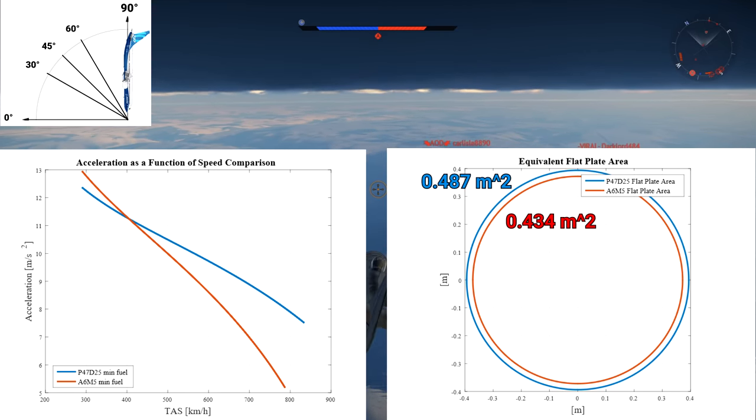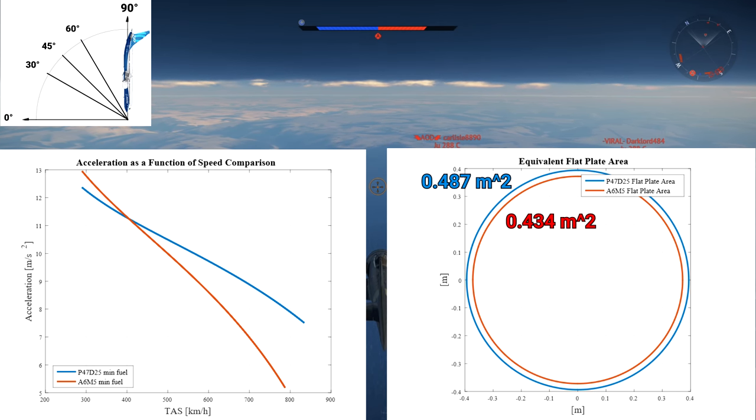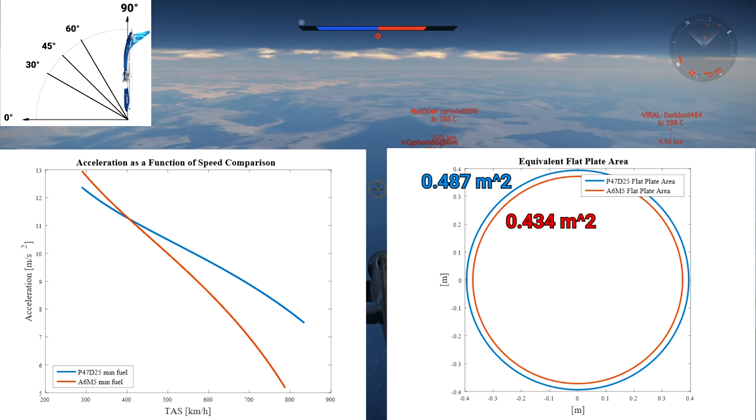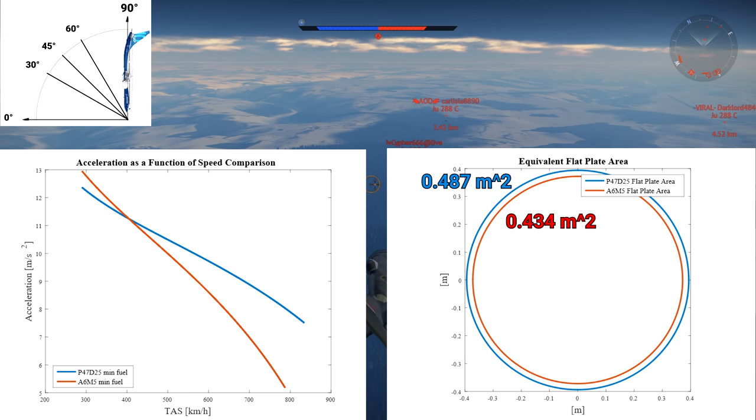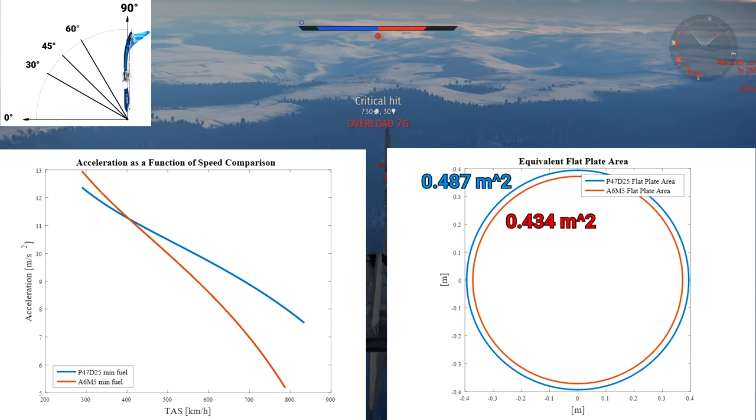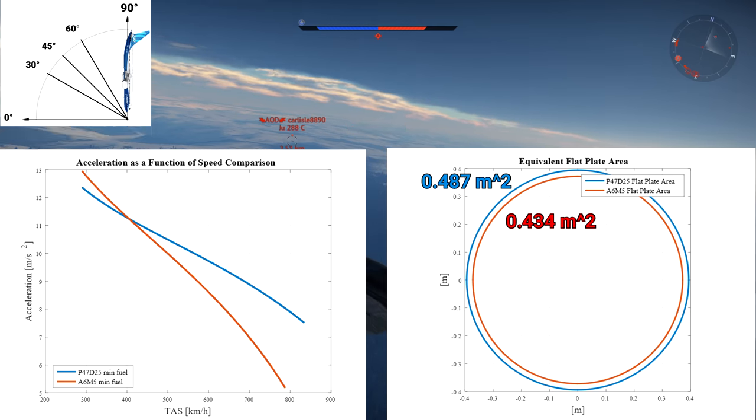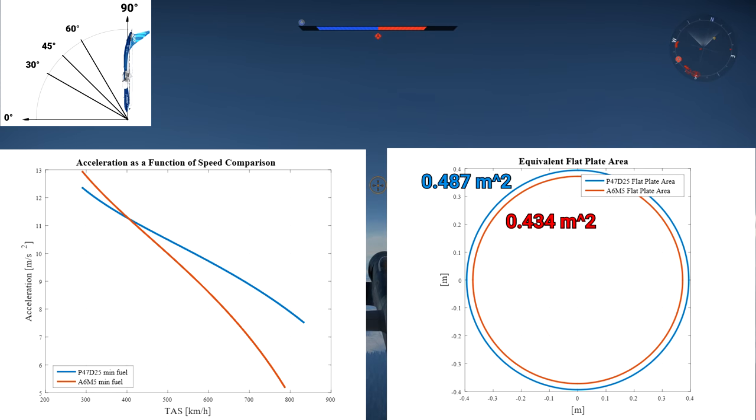Interestingly, the equivalent flat-plate drag area of 0.45 square meters is similar to that of us standing humans, so you'd experience approximately as much drag as a WWII fighter aircraft if you were upright and moving at the same speed. Pretty cool.